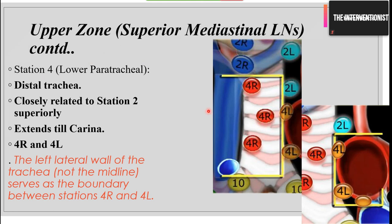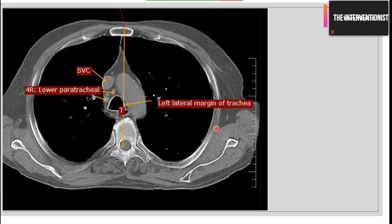Station 4 is the lower paratracheal. Here again, the landmark is the left lateral margin of the trachea — nodes to the left are labeled 4L and to the right are labeled 4R. It is closely related to 2R superiorly. The landmark separating them superiorly is the innominate vein, and inferiorly is the bifurcation of the trachea. Even if the lymph node crosses the midline toward the right side, it is still labeled 4R. These two lymph nodes are lower paratracheal or 4R nodes, with the SVC visible nearby.